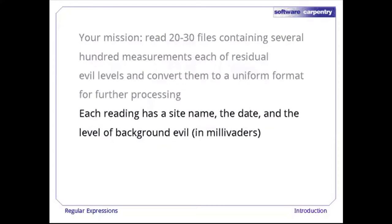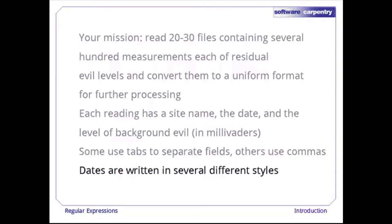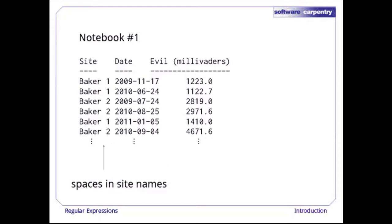The problem is these files aren't formatted in the same way. Some of them use tabs to separate fields, others use commas, and the dates are written in several different styles. Let's take a look at one of those files. It uses a single tab between each column as a separator, and while the spaces and site names are visually similar, they're different characters.